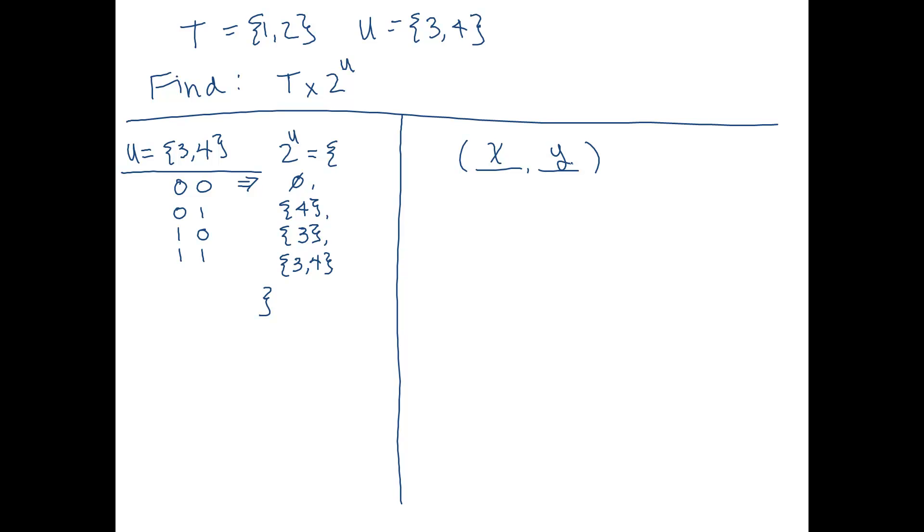And x is going to be an element of T. And y is going to be an element of the power set of U. Okay, so let's start enumerating these ordered pairs.